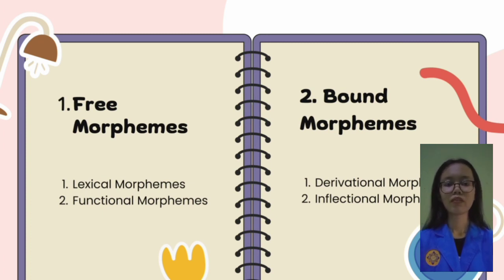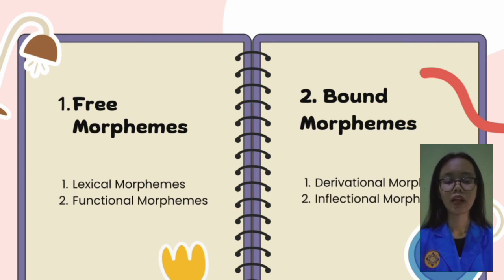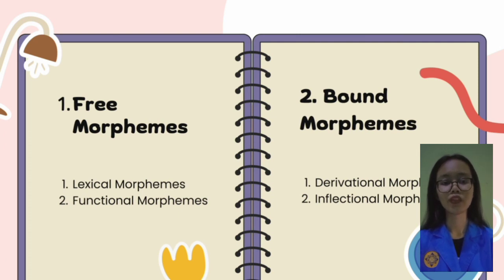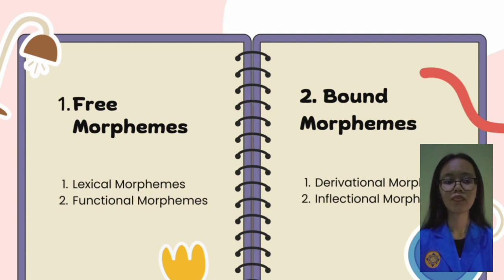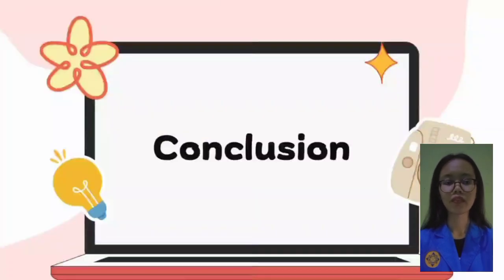Bound morphemes are morphemes that cannot stand alone but must be attached to other morphemes. Bound morphemes are divided into two types: derivational morpheme and inflectional morpheme. Derivational morphemes are used to create new words or create words from different grammatical categories than the root word. For example, adding the derivational morpheme '-ness' changes the adjective 'good' to form the noun 'goodness.' Inflectional morphemes are used to show if a verb is plural or singular, if it is past tense or not, and if it is a comparative or shows possession.